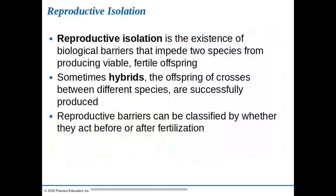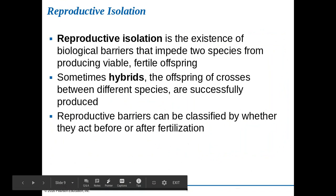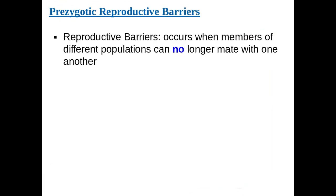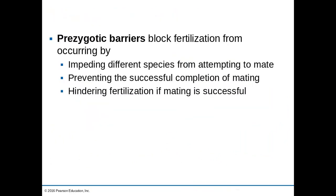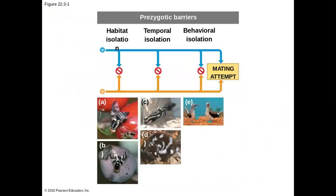We classify reproductive barriers into two types: prezygotic barriers and postzygotic barriers, referring to whether the barrier happens before or after the egg is fertilized. Prezygotic reproductive barriers occur when members of different populations can no longer mate with each other. The types of prezygotic barriers are behavioral, temporal, geographic, mechanical, and gametic. These prevent fertilization by preventing mating at all, preventing successful completion of mating, or preventing fertilization of the egg if they do mate.